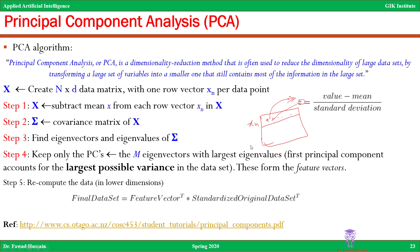Once the data is standardized, the next step is to compute the covariance matrix of X. So if you had features F1 and F2, you take F1 and F2 and compute their covariance, and so on. Let the resulting covariance matrix be sigma. So you took the original data X, standardized it, and then computed the covariance matrix sigma from it. Step three is to find the eigenvectors and eigenvalues of sigma, the covariance matrix of X.